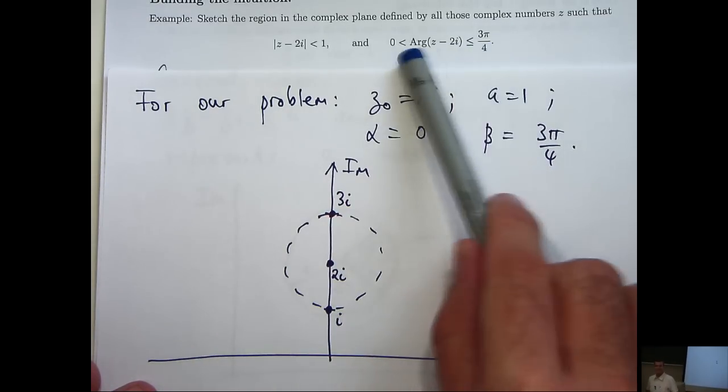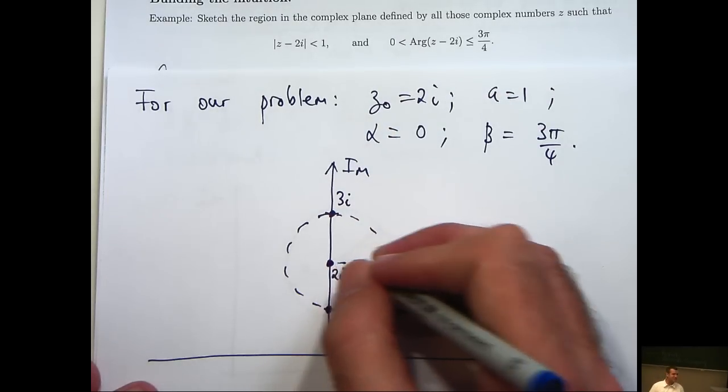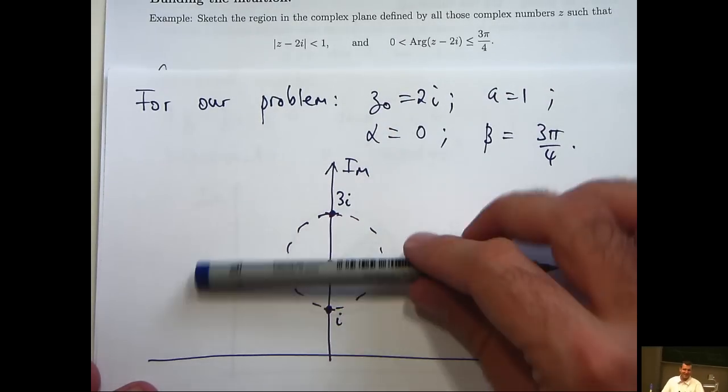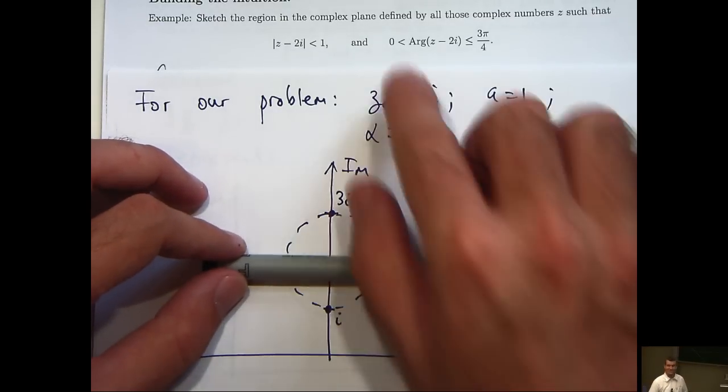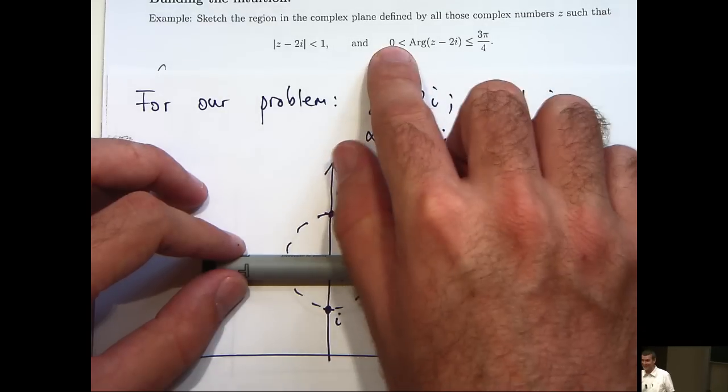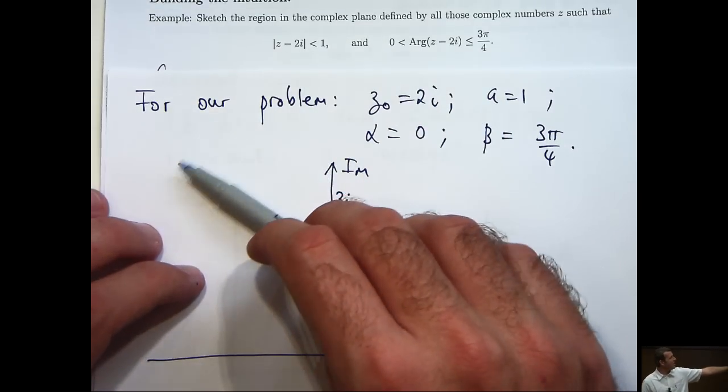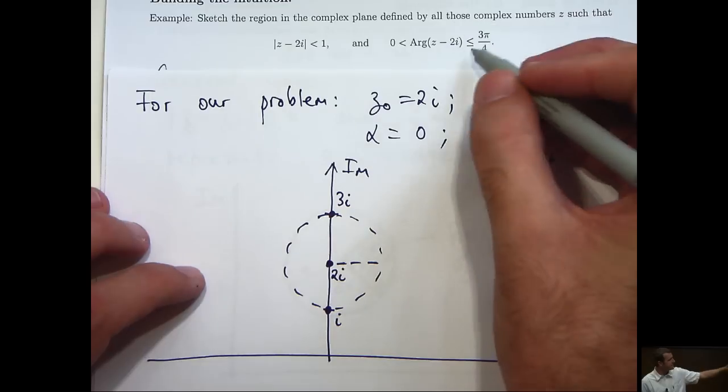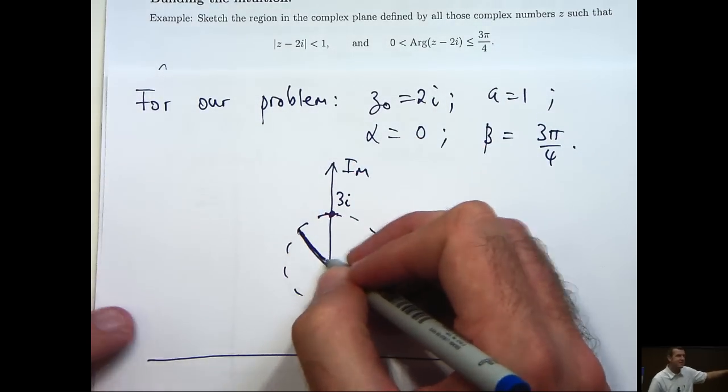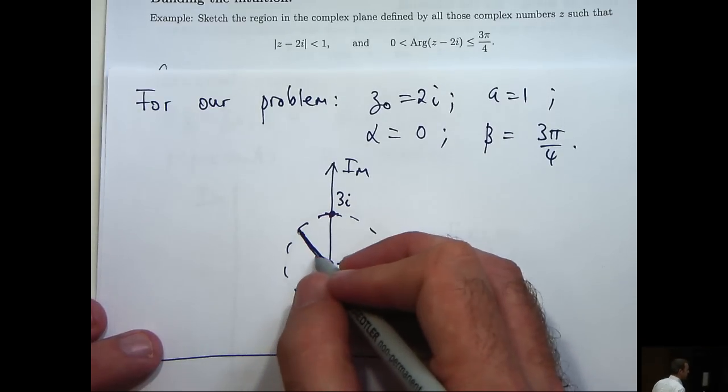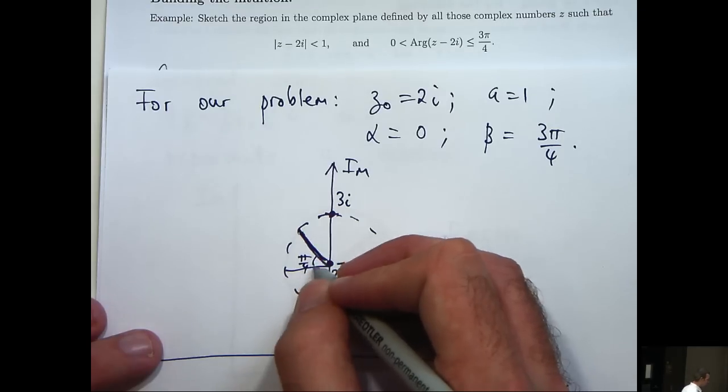Alright, so let's look at our angles now. So in this case alpha is 0, so I can just go straight out here because remember I draw a, or I consider a horizontal line and I want to rotate. Okay, so the first condition says that I don't do any rotation. The second condition says I rotate around 3pi on 4 radians. And because I have less than or equals to, I don't need to draw a dotted line here. Okay, so basically I want to show you that there's an angle of pi on 4 radians down here.